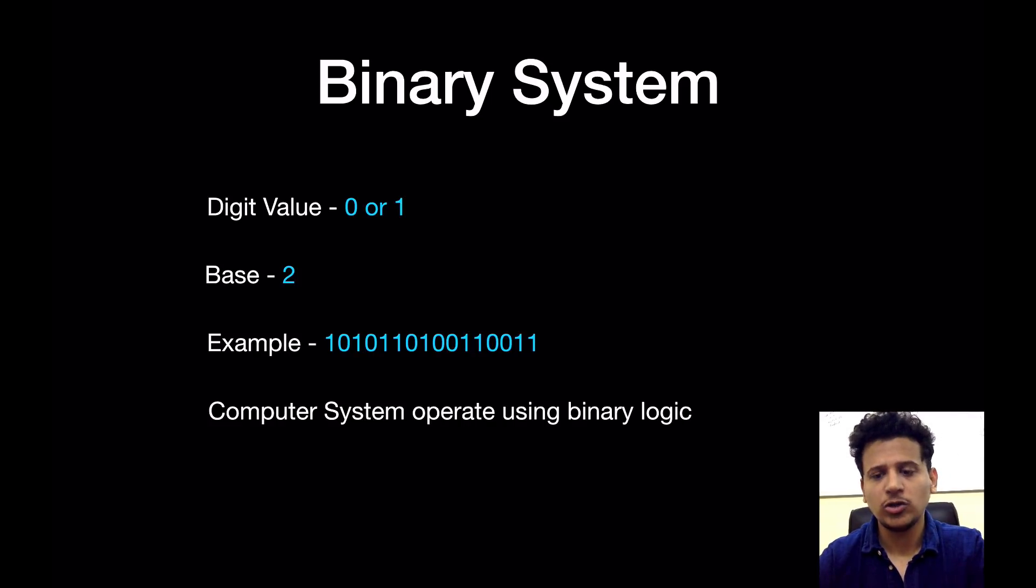In the binary system, digit value is either 0 or 1, that means the base is 2. This is an example of a binary system. Computer systems generally operate using binary logic. They just know only 0 or 1.